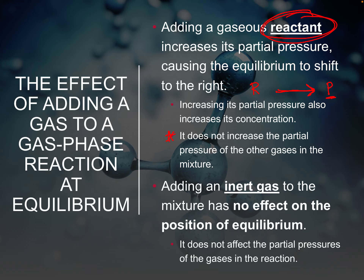Adding more reactant gas does not increase the partial pressure of any other gases in the mixture — gas particles are very small and very far apart, so added gas doesn't affect the others. Related to this, if you add an inert gas that is not in your reaction — like neon or argon — it is not going to impact your reaction at all because it doesn't show up in the reaction. It's unreactive — noble gases like neon, argon, or helium won't react.